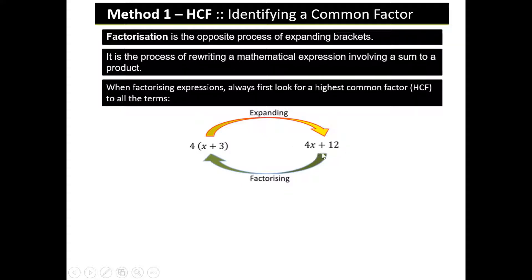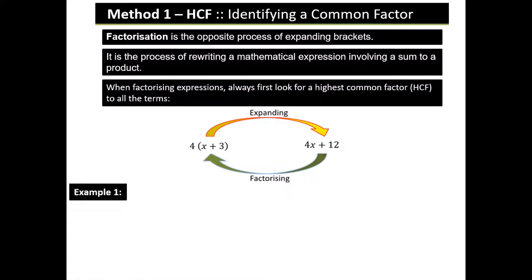You'll be given something like this without any brackets. Your goal is to take out the common factors if there are any, and then put the remainder in the brackets. We'll have a look at the first example.